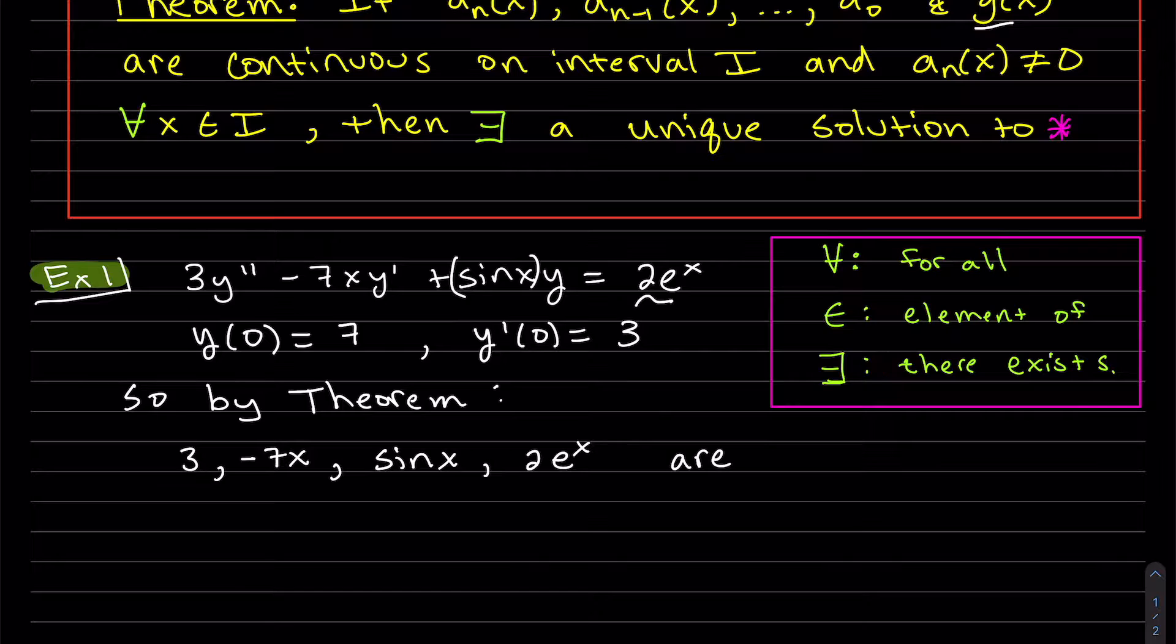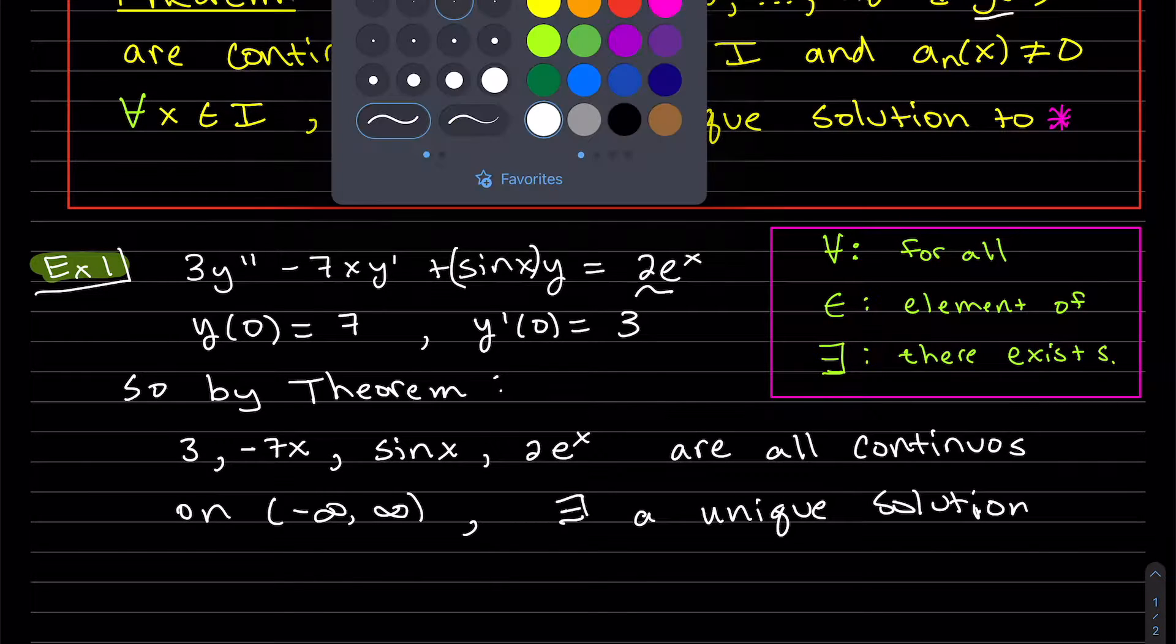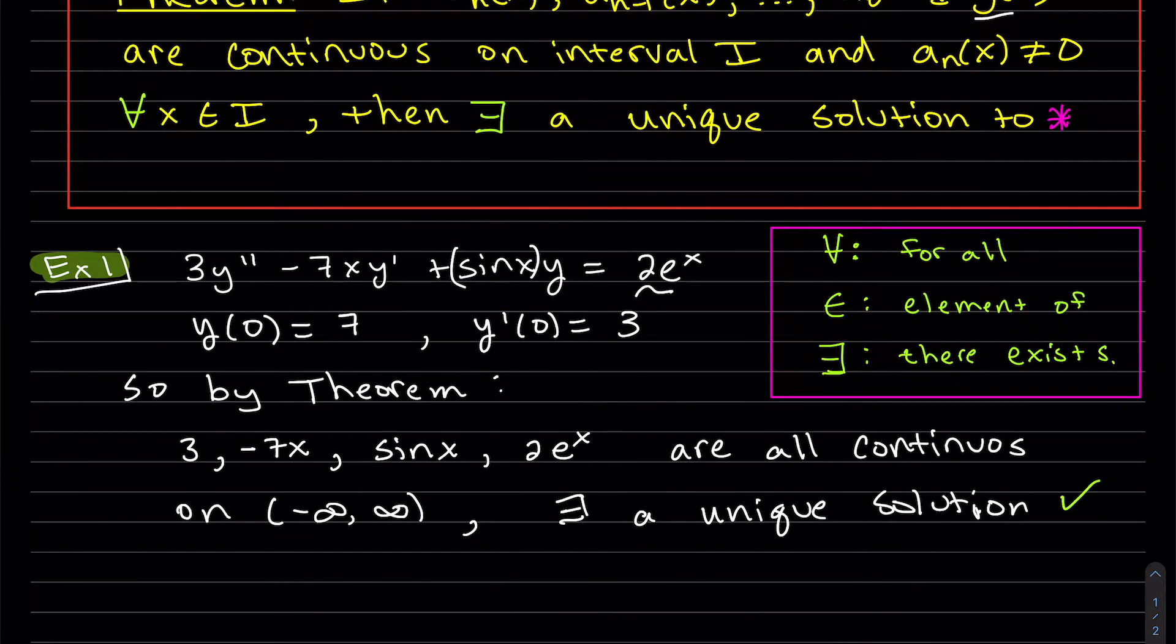It's actually continuous on the interval of all real numbers, negative infinity to infinity. So there exists a unique solution. And that's exactly what the theorem gives us.